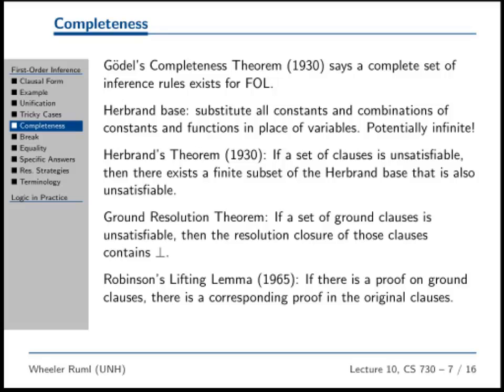But then Herbrand came along. He was a French guy, so his name is probably Herbrand. Herbrand was like, oh wow, what if we substitute all possible constants and all possible combinations of constants and functions in place of all the variables? So now my KB, instead of having pretty little variables all lined up, just has like ground terms everywhere. Whoa, wouldn't that be cool? Well, it would be infinite for a lot of KBs because of the nesting of functions. But he came up with this idea.